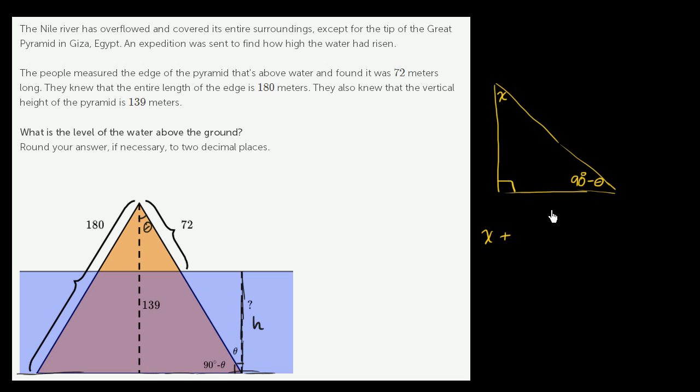We could say x plus 90 minus theta plus 90 degrees is going to be equal to 180 degrees, since the sum of the angles of a triangle are 180 degrees.